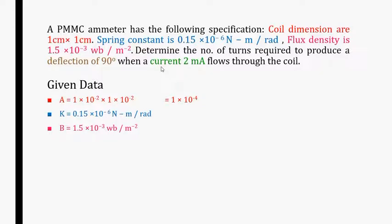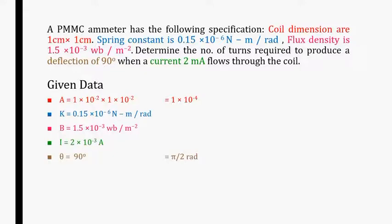When a current of 2 milliampere flows through the coil, I equals 2 x 10^-3 ampere, and this current is going to produce a deflection of 90 degrees. The spring constant is in Newton meter per radian, so we convert 90 degrees to radians, which gives pi by 2 radians.